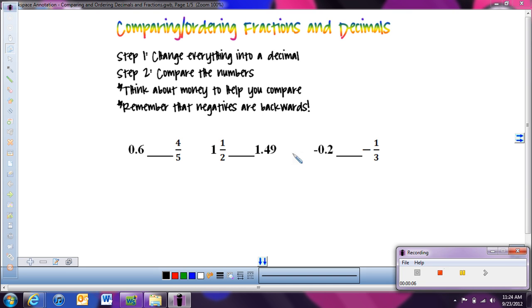So first, we're just going to look at comparing two numbers and how we're going to do that. If I look at this first one, I have 6 tenths and 4 fifths. So for me, my first step would be to change everything into a decimal. We already have 0.6, 6 tenths, and that's already a decimal, but I'm going to change 4 fifths into a decimal.